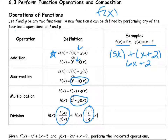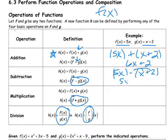Putting parentheses here is important for when I'm doing subtraction. So I might have 5x minus (x plus 2), and I need to distribute that negative. So that would be 5x minus x minus 2, which gives me 4x minus 2. Notice if I had done g of x minus f of x, that's going to give me a different answer — so order matters for subtraction and division.